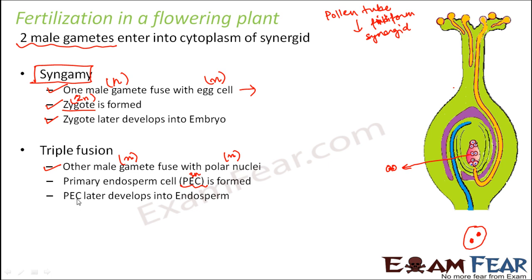This PEC will later develop into the endosperm. The endosperm is the part which provides nutrition to the embryo. The zygote will develop into an embryo, and the embryo will gradually grow to form a seedling and then a plant, so it needs nutrition, and that nourishment is provided by the endosperm.